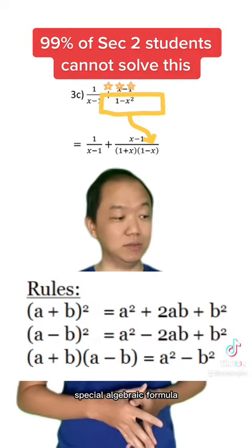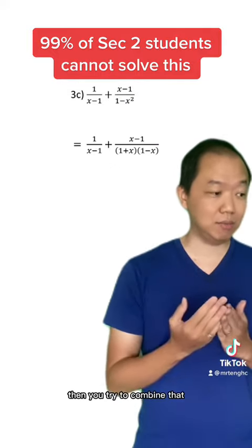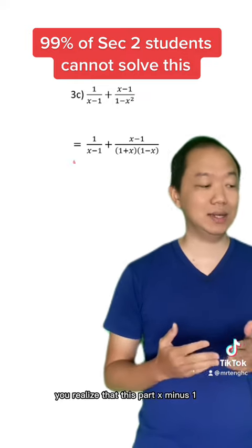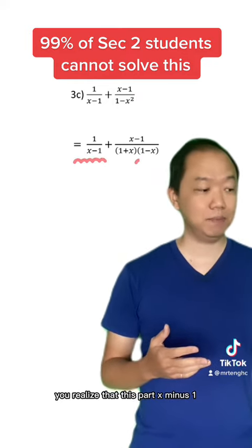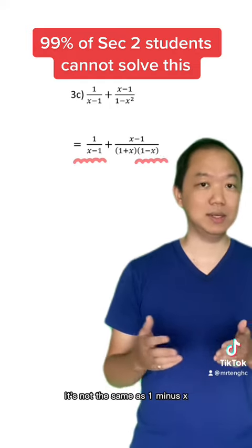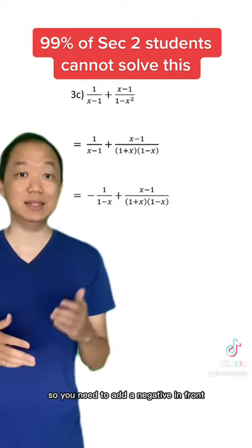Then you try to combine that, but before you combine that, you realize that this part, the x minus 1, is not the same as 1 minus x, so you need to add a negative in front.